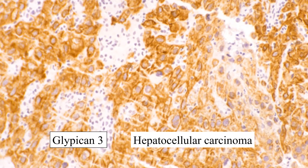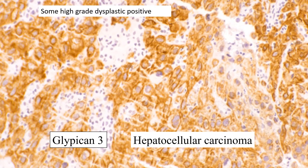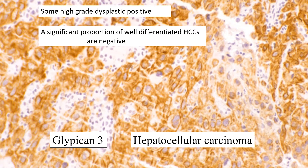The stain I really count on is glypican-3. What you should see is intense cytoplasmic membrane staining, though often the entire cytoplasm will be positive. Two important caveats: first, some high-grade dysplastic nodules could be positive, so a non-malignant process can be positive — though in practice that doesn't matter so much. The more important caveat is that a significant proportion of very well-differentiated HCCs — the exact situation where you need it most — are negative. So if it's positive, great; if it's absent, you're out of luck.